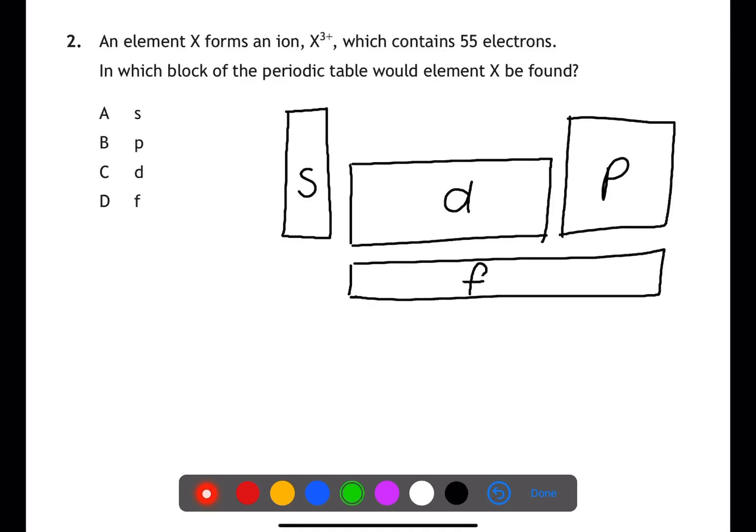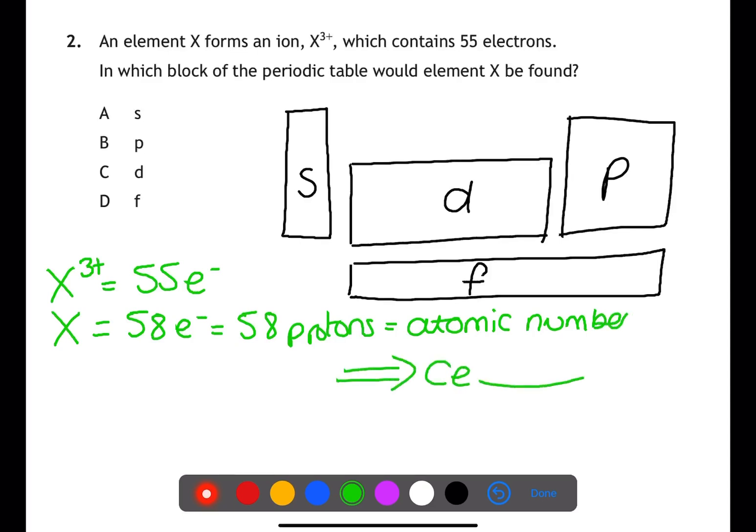If an element X forms an ion X3+ which contains 55 electrons, this means that the element itself, without a charge, would contain 58 electrons. If this contains 58 electrons, then this means it also has 58 protons, which is its atomic number. By looking up atomic number 58 on the periodic table, you will find that it is cerium and is in the F block at the bottom. This means the answer is D.